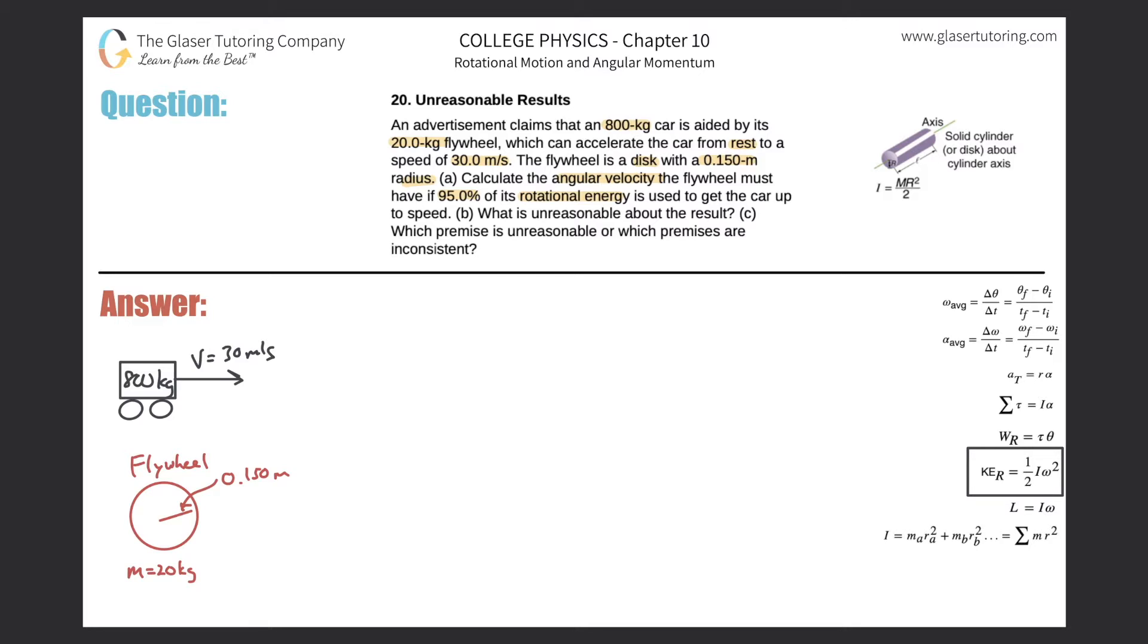Now thinking about this, remember the conservation of energy - energy isn't created or destroyed, it's just transferred. So the kinetic energy the car has once it gets up to speed came from the rotational energy produced by the flywheel. We can say that the kinetic energy that the car has should equal the kinetic energy of rotation due to the flywheel.